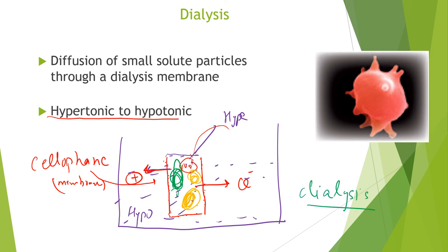Our kidneys use this dialysis process to separate toxins from our blood. Toxins such as urea are small molecules which can cross the barrier, but blood also contains large proteins that cannot cross the barrier. That is the principle by which kidneys purify your blood.